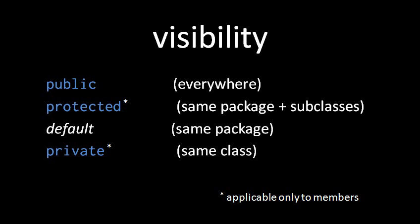Every time we declare a field or method, we give it one of four different access levels: public, protected, default, and private. To declare a member to be either public, protected, or private, you precede it with one of these three reserved words. A field or method not preceded by one of these three words has default visibility. As for classes and interfaces, they can only be either public or default — they can't be protected or private. So every class and interface is going to have either public visibility or default visibility.